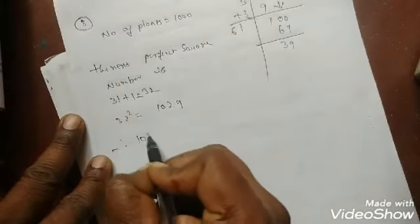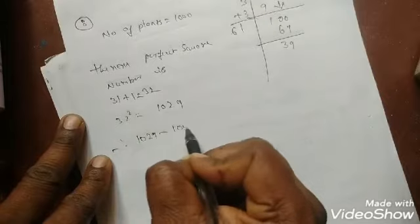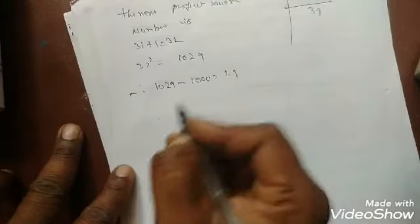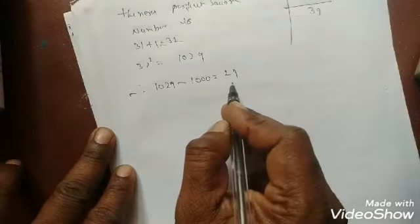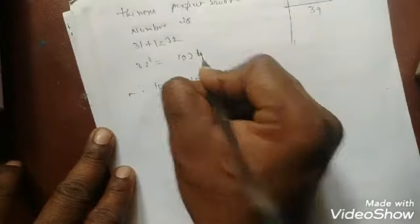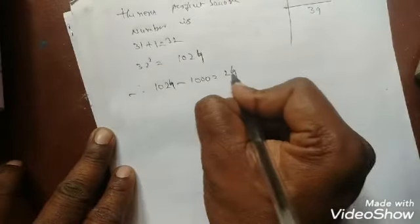Therefore, 1029 minus 1000, you will get 29. Subtract. Sorry, this one is 1024. You will get 24.